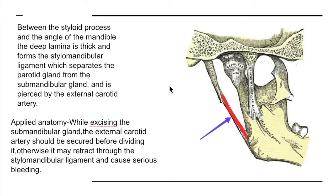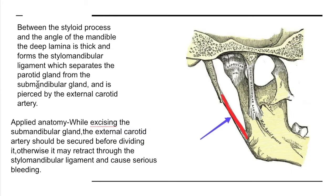Regarding the deep lamina: although it is thin, between the styloid process and the angle of the mandible the deep lamina forms a thickening called the stylomandibular ligament, which separates the parotid gland from the submandibular gland.